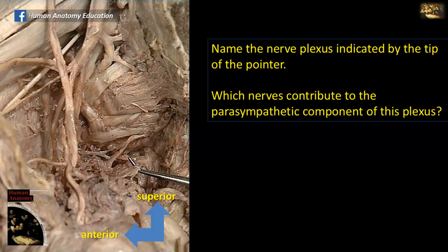Let's orient ourselves. Here you can see some of the branches of the internal iliac artery, the anterior division and the posterior division of the internal iliac artery. These are the roots of the sacral plexus and they lie on piriformis muscle. The plexus that we are asked to identify, located at the tip of the pointer, is a small nerve plexus located medial to the sacral plexus, in the fascia on the side of the rectum, in the pararectal fossa.